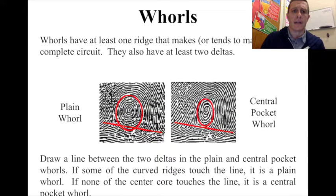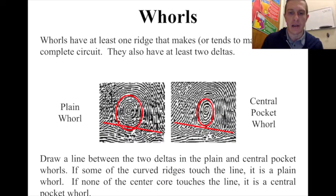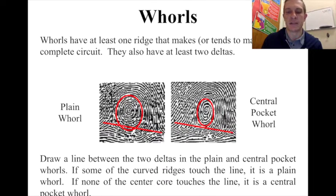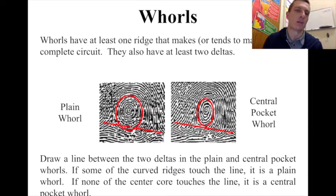Whorls are a type of fingerprint that have two deltas. You can find one delta here and another delta there, and by having two deltas, a circular pattern forms in the middle between them. The difference between a plain whorl and a central pocket whorl is that the central pocket whorl is a little bit smaller — if you take a line from the two deltas and find a pocket right in the middle above them, you have a central pocket whorl. If the whorl drops below the two deltas, which is much more common, you have a plain whorl.